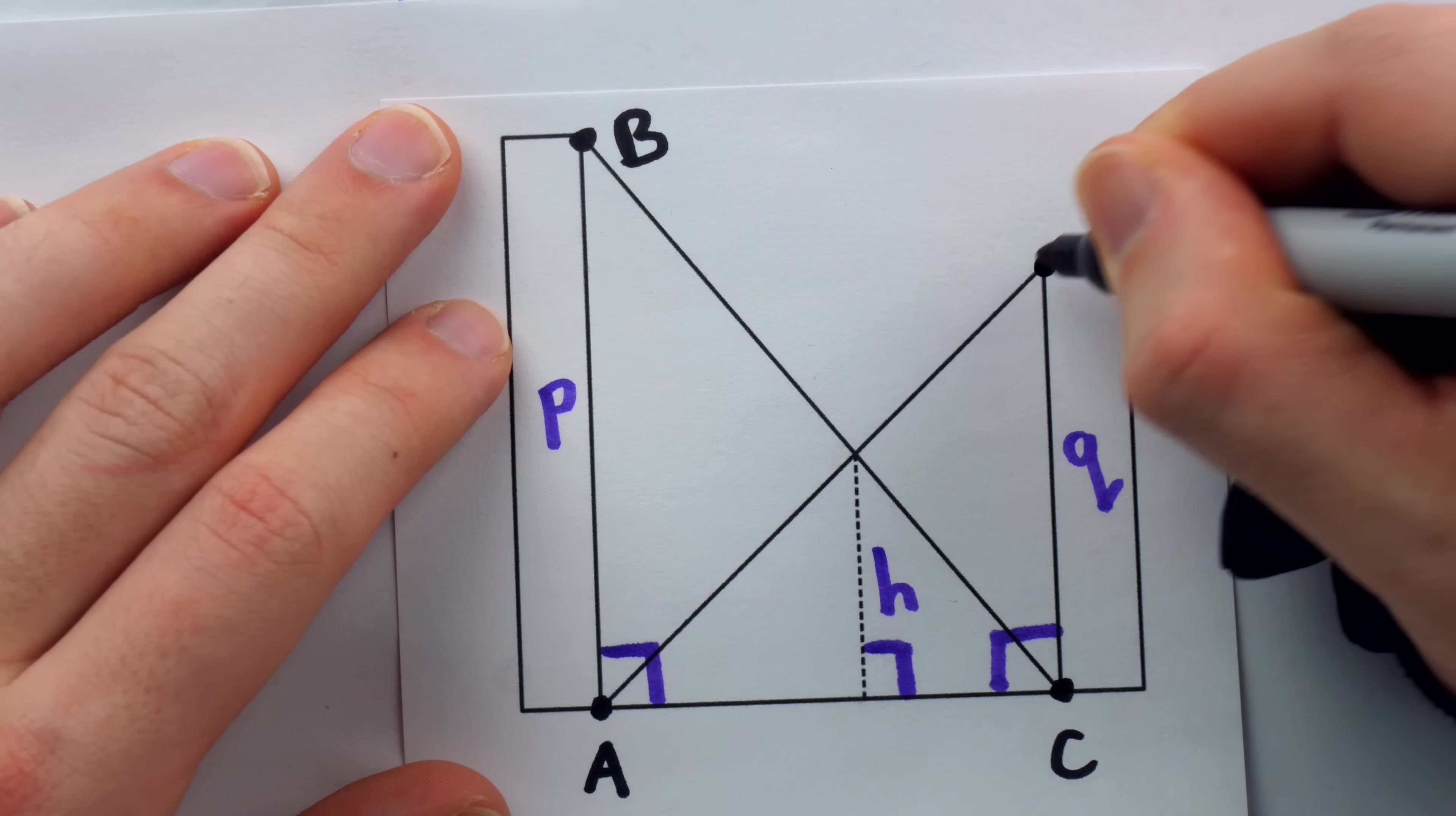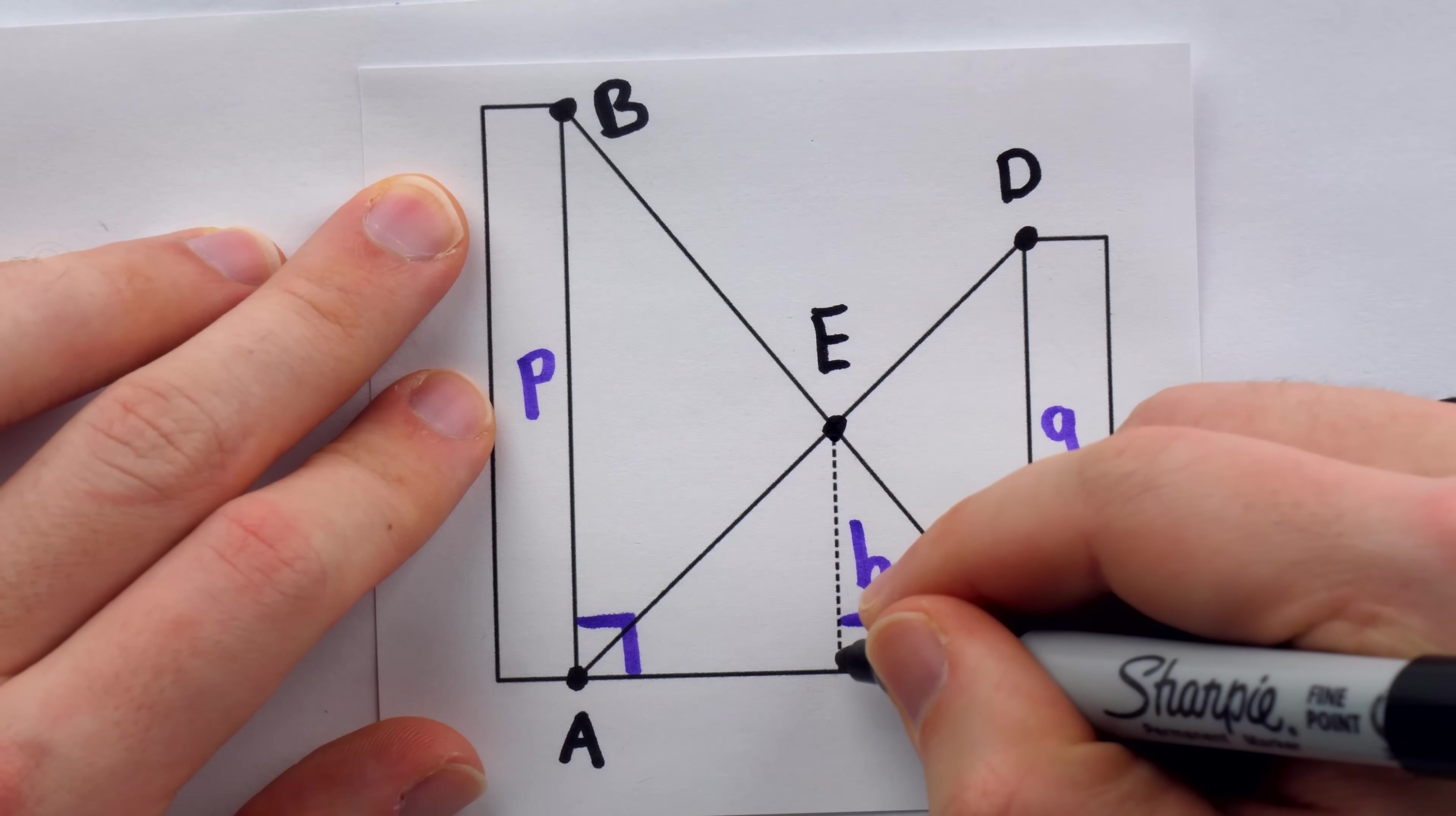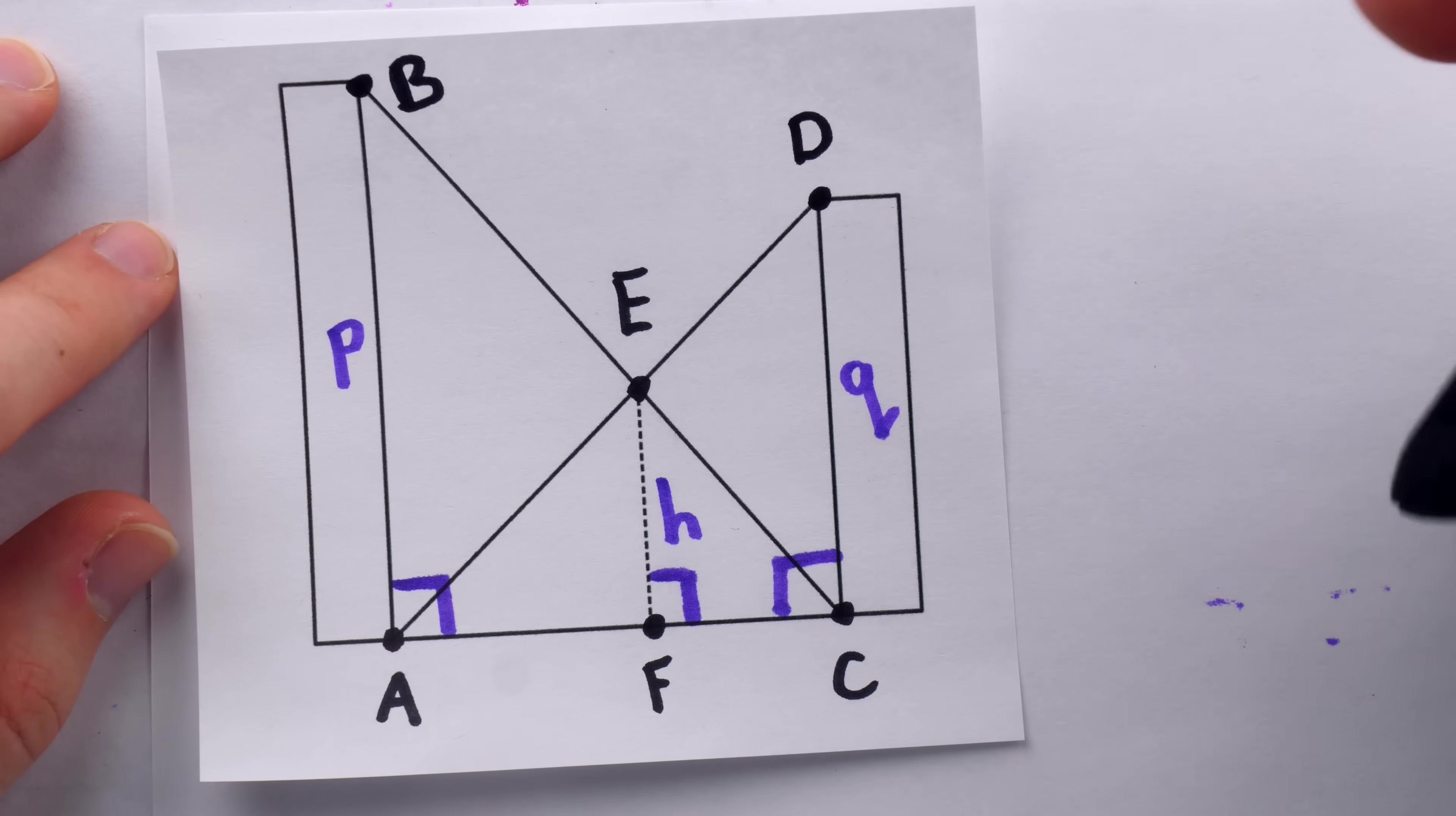We'll also call this point over here D, which gives us this triangle A, C, D. And if we find it useful to refer to these points, we'll give them names as well. That point of intersection of those two strings is E, and where this string reaches the ground, we'll call that point F. All right, immediately, we have two pairs of similar triangles.